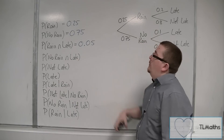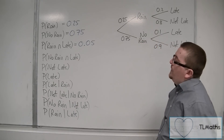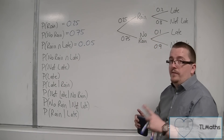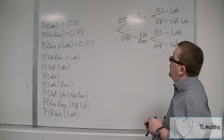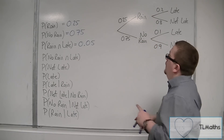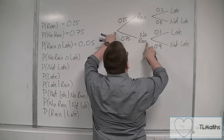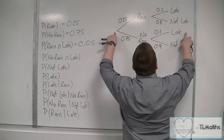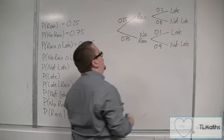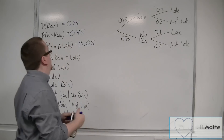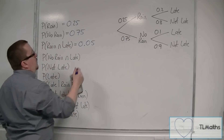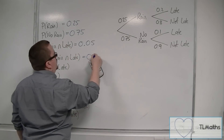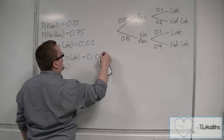Let's say we want to find the probability of it not raining and then the person is late. So, no rain: 0.75 multiplied by 0.1, which gives us 0.075.